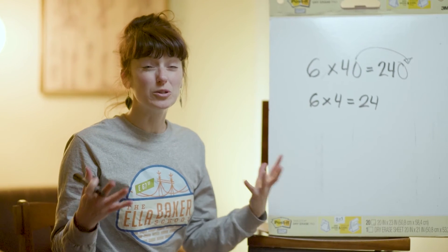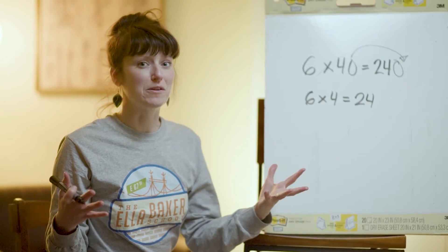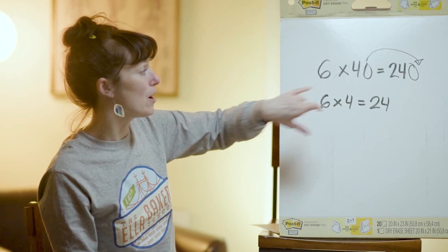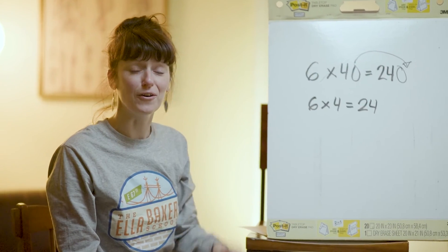So that is a really cool thing about multiplying by a multiple of 10, is that you first can multiply the fact that you know, and then just move your 0 over.